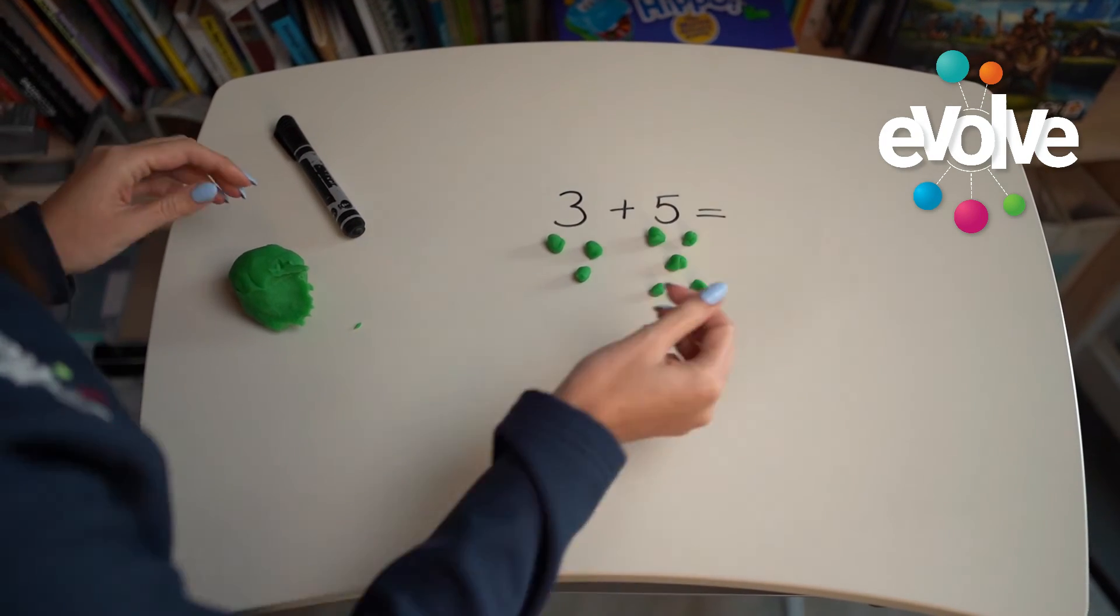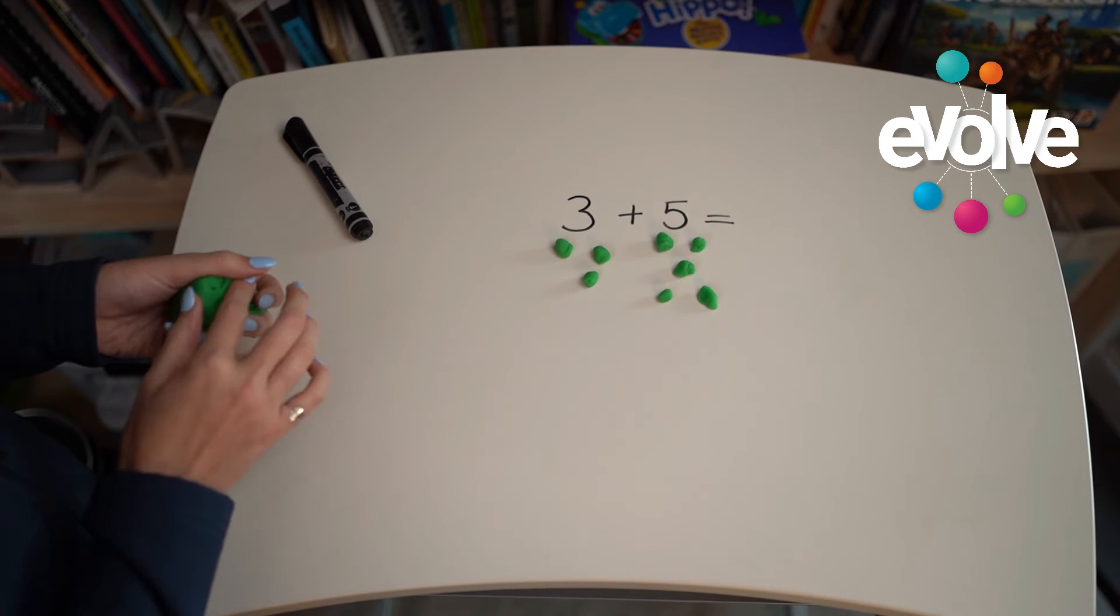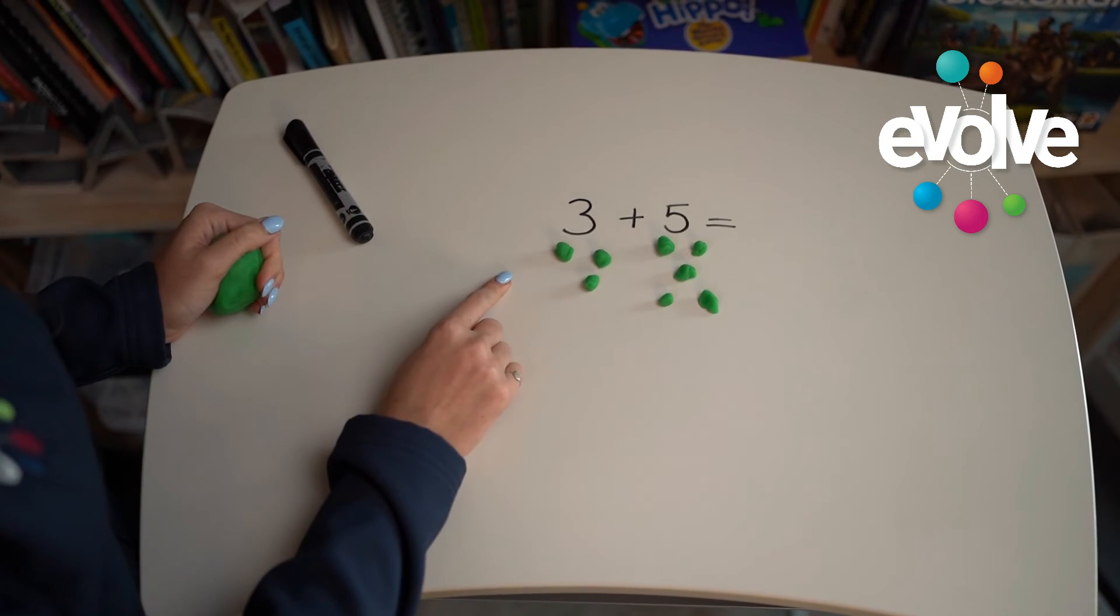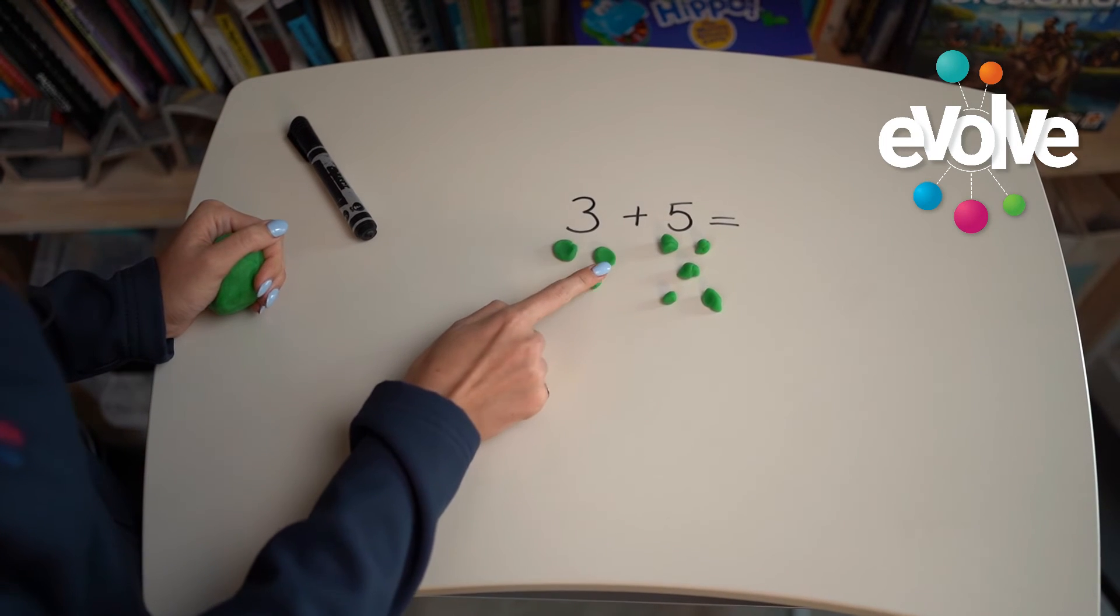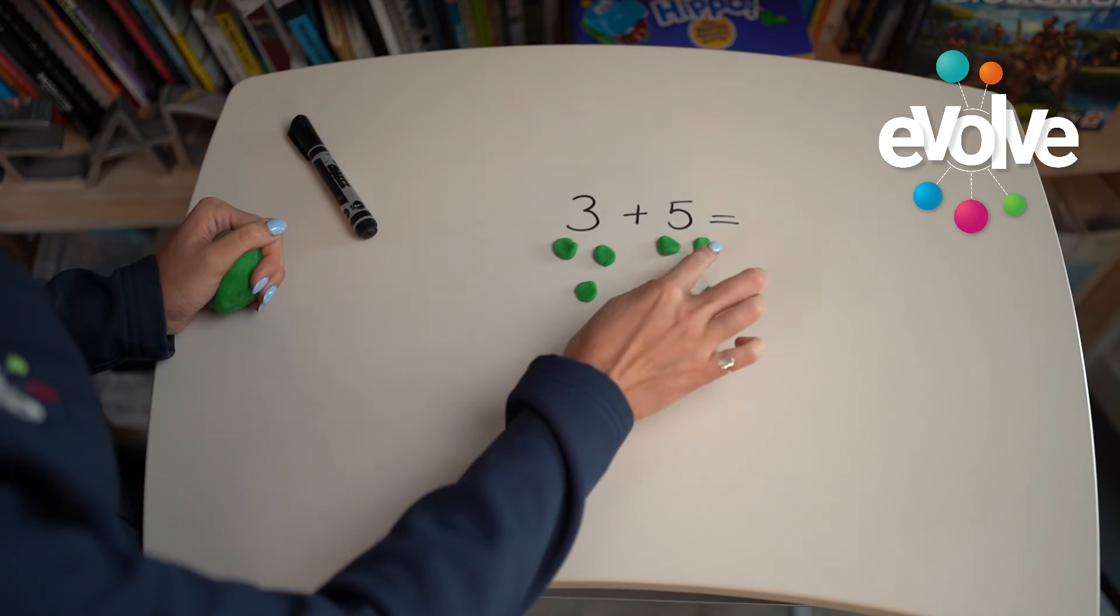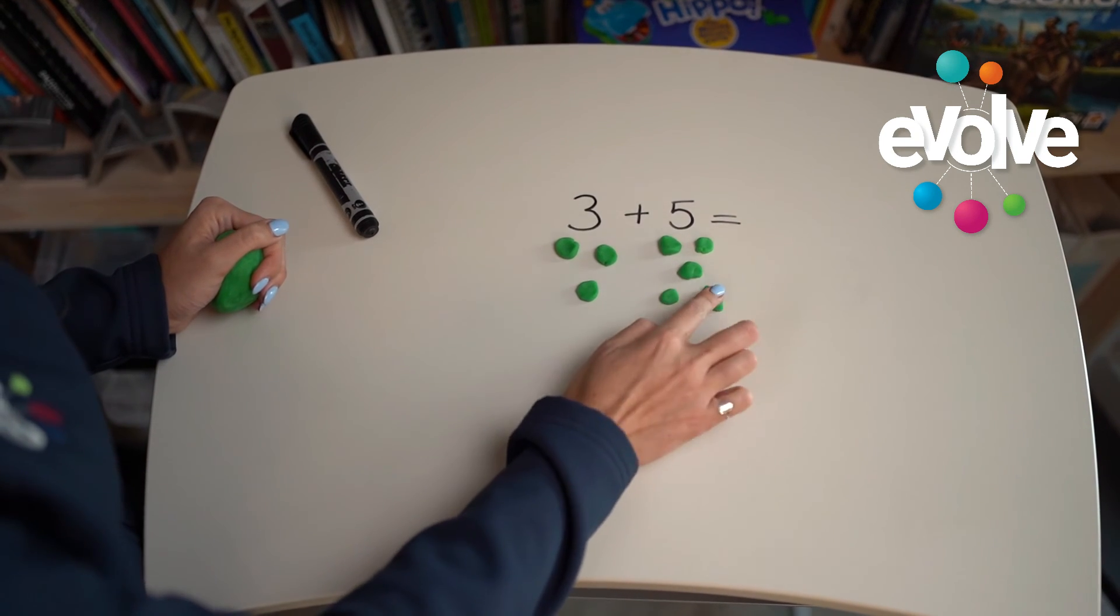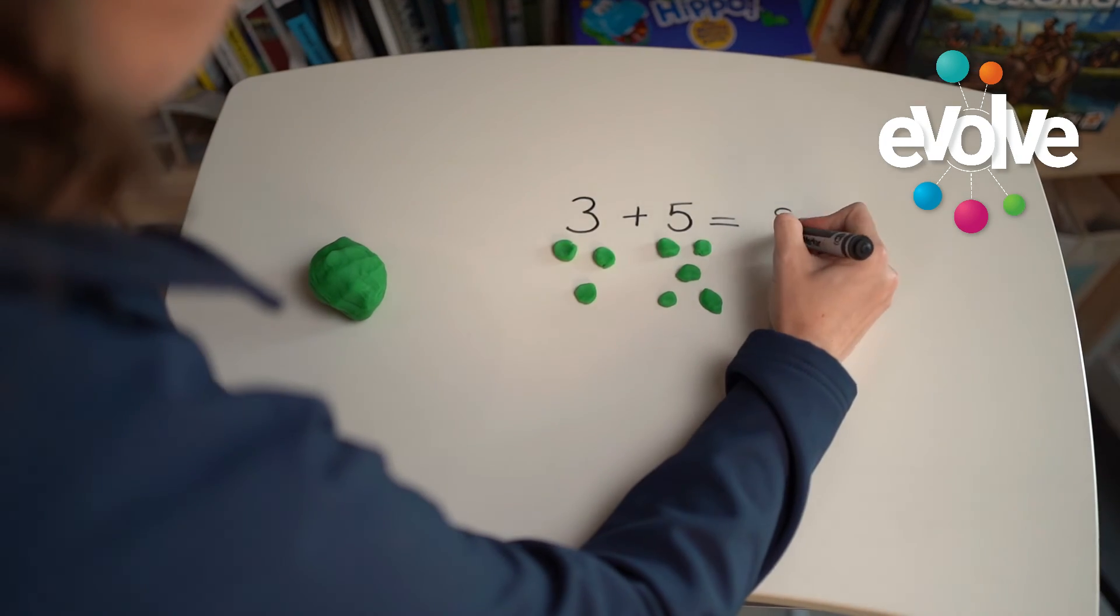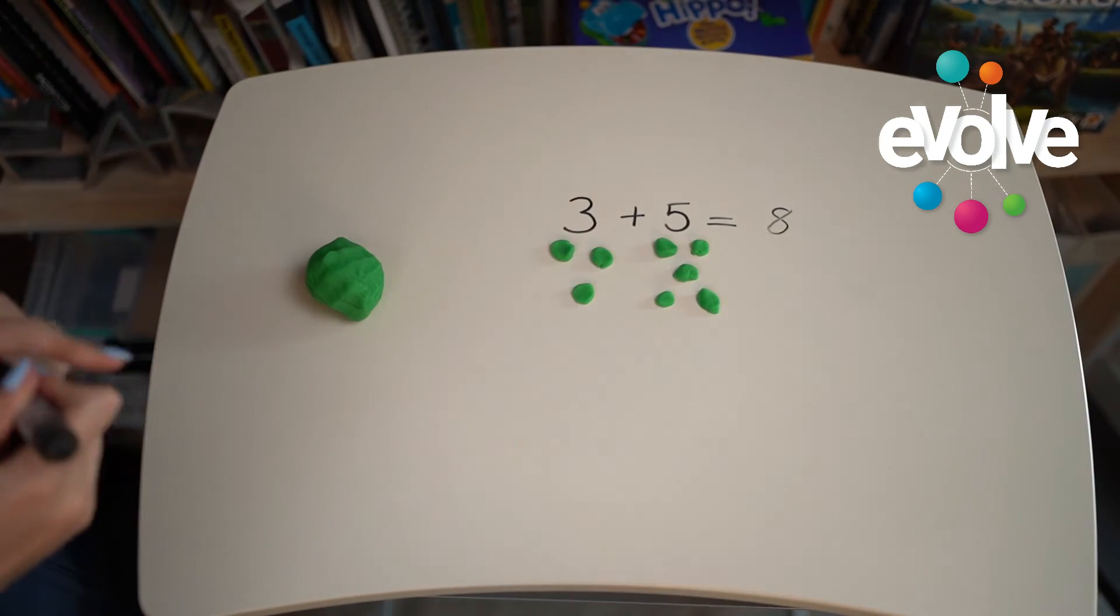Now to make sure that we're adding up our numbers properly, we're going to squish or mush our play-doh balls to make sure that we're counting our numbers correctly. So we're starting: one, two, three, four, five, six, seven, eight. And we know that 3 plus 5 gives us 8.